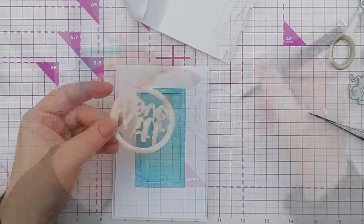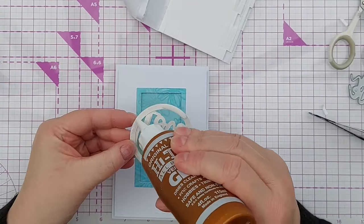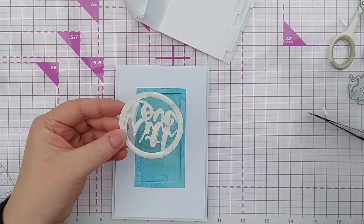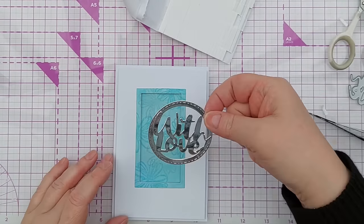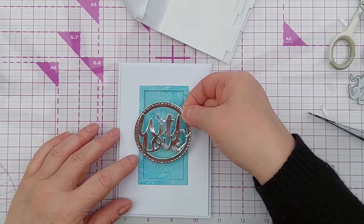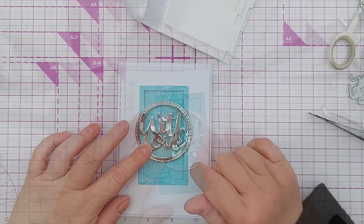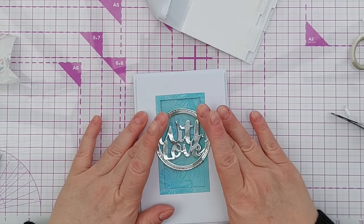I can take some even shorter bits and pop them behind the widest part of some of the letters just to support that a little bit. I'm also going to add a little bit of glue to the sides where this is going to be in contact with card, and pop this on here and make sure everything that needs to be stuck is stuck.